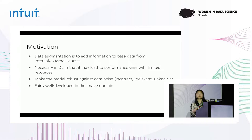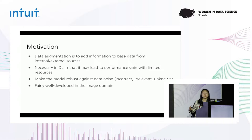Data augmentation, as you all know as data scientists, is about adding information to base data from internal or external sources. Traditionally it's been internal, but with advanced style transfer and GAN augmentation, we're now using external sources through transfer learning. In deep learning, data augmentation is so necessary that regardless of how much data you have, it can lead to performance gains, make the model robust against noise, and generalize the model.